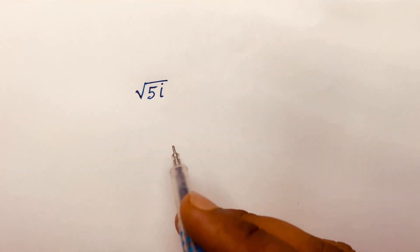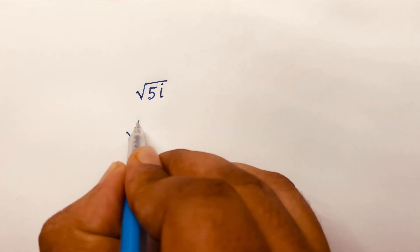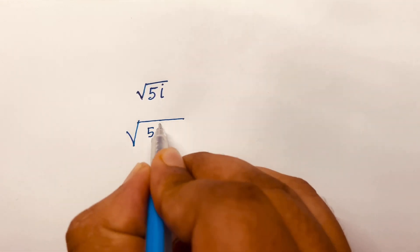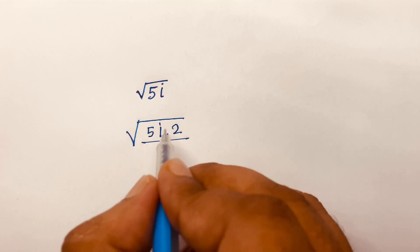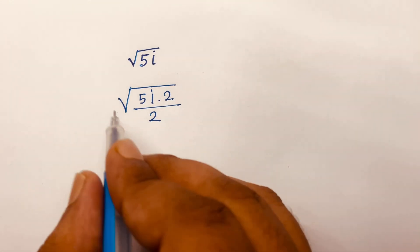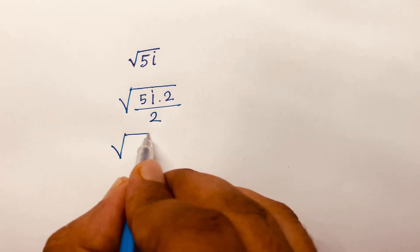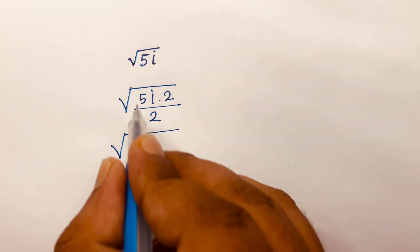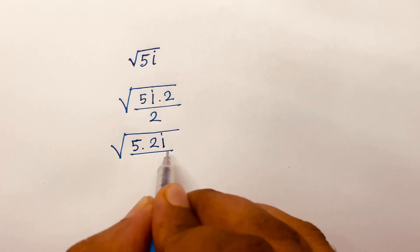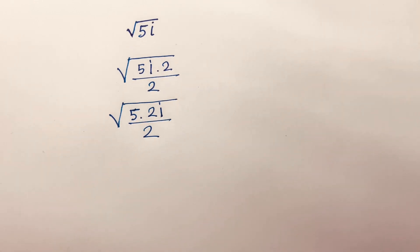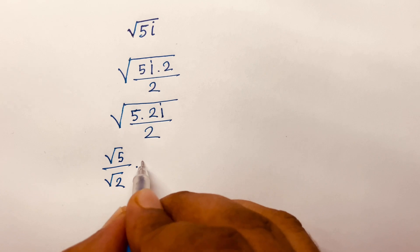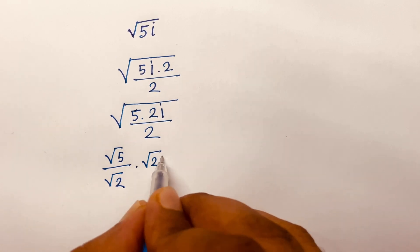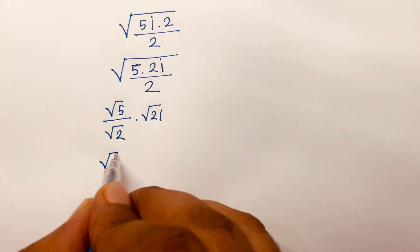How to solve the square root of the complex number 5i. First, I write it as square root of 5i times 2 over 2 — the 2 cancels — giving square root of 5 times 2i over 2. Then it becomes square root of 5 over square root 2 times square root of 2i.